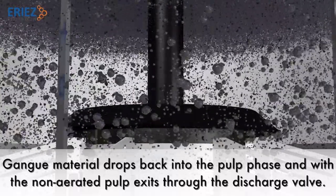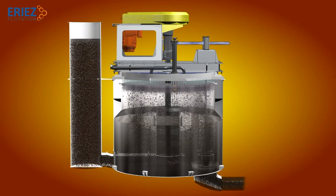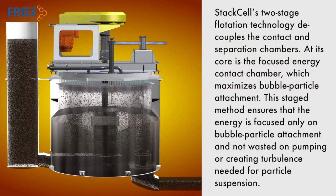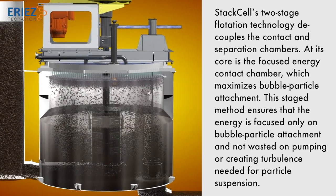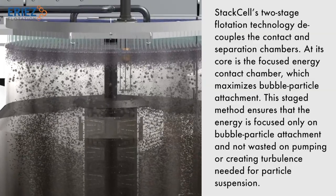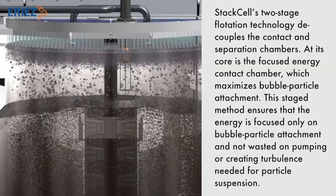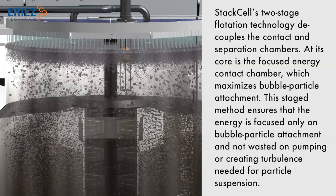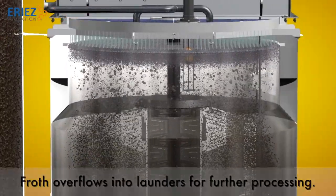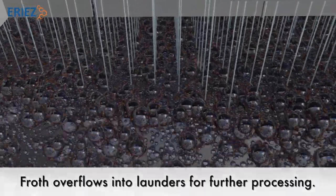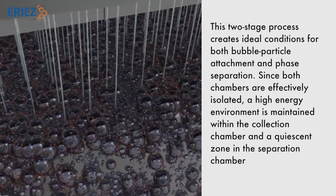Gangue material drops back into the pulp phase and, with a non-aerated pulp, exits through the discharge valve. Staxel's two-stage flotation technology decouples the contact and separation chambers. At its core is the focused energy contact chamber, which maximizes bubble-particle attachment. This staged method ensures that energy is focused only on bubble-particle attachment and not wasted on pumping or creating turbulence needed for particle suspension. Froth overflows into launders for further processing.